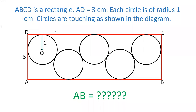Hello friends, welcome to our YouTube channel SSC Selector. In this video, there is a rectangle ABCD of width 3 cm and there are 5 circles drawn such that each circle has radius 1 cm and they are touching each other something like this.